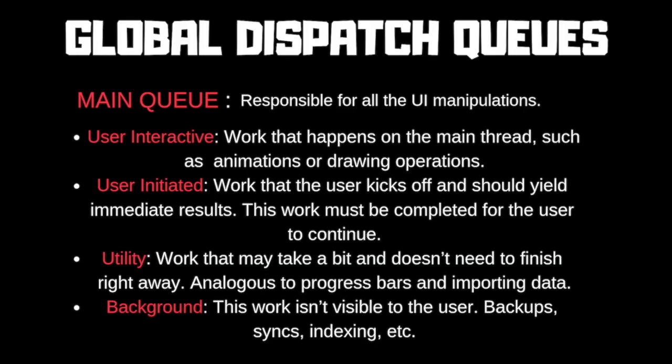Now let's talk about global dispatch queues. Besides custom user queues, iOS offers some out-of-the-box global dispatch queues of five kinds. The first is the main queue, which is responsible for all UI manipulation. In Swift syntax, you can write it as: `let main = DispatchQueue.main`. If you need to execute a function or closure affecting the UI, it has to be placed on the main queue, as this is the first-priority global dispatch queue. There are four background concurrent queues with different QoS (Quality of Service) capabilities and priorities.